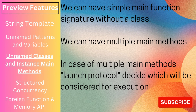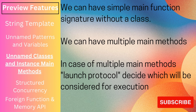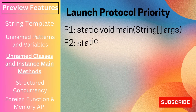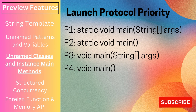Unnamed classes and instance main methods — we already discussed this at the beginning. We can have a simple main function signature without any class, also known as unnamed classes. If multiple main methods are present, the launch protocol decides which one to call. It searches in this order: first, static void main(String[] args) — the old signature; then static void main(); then void main(String args); and finally the simplest: void main().